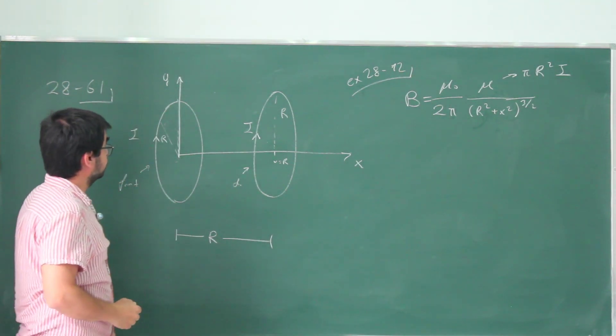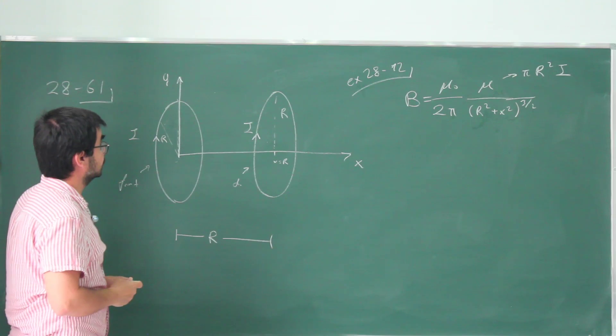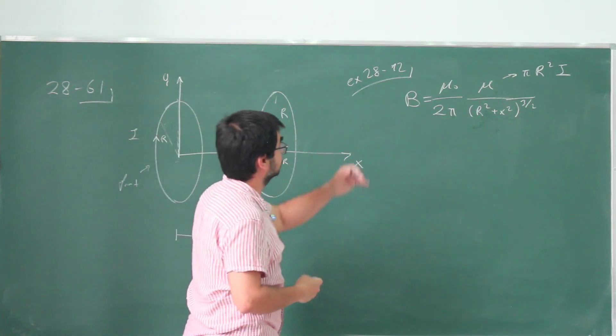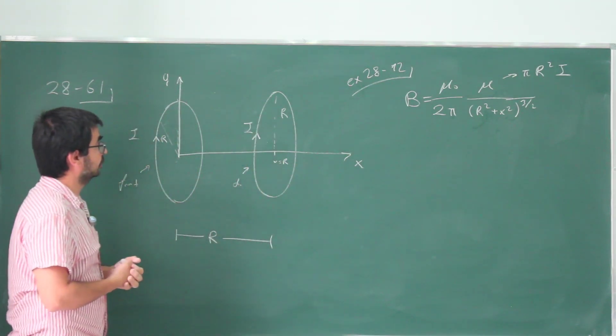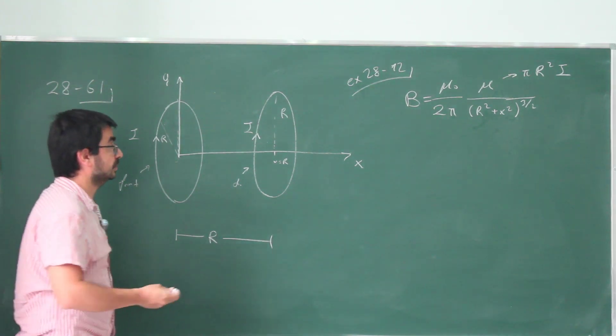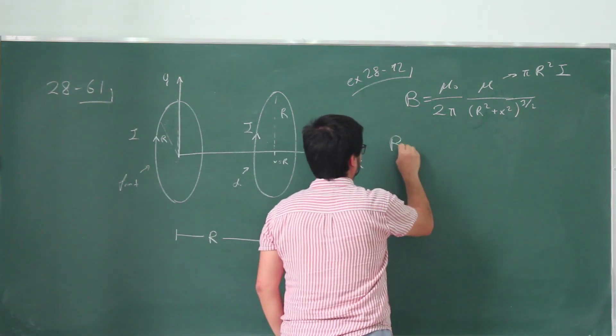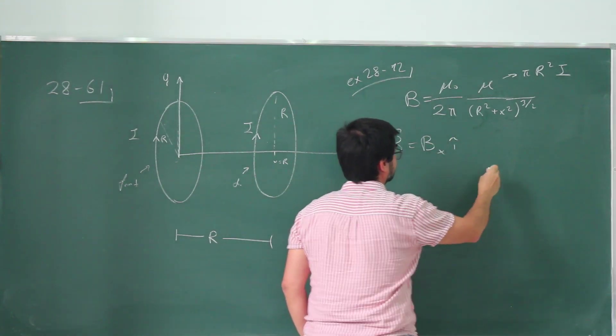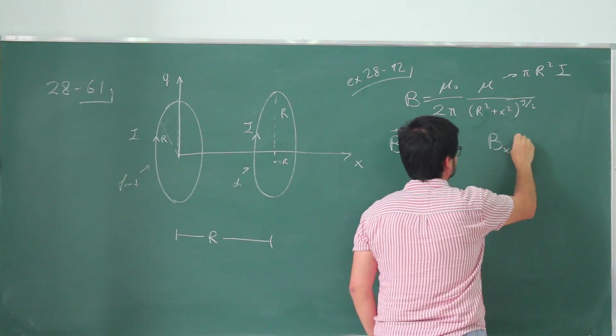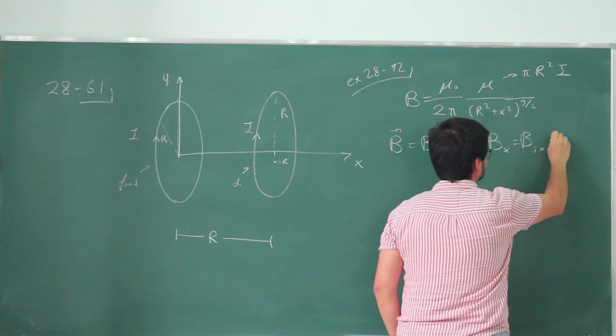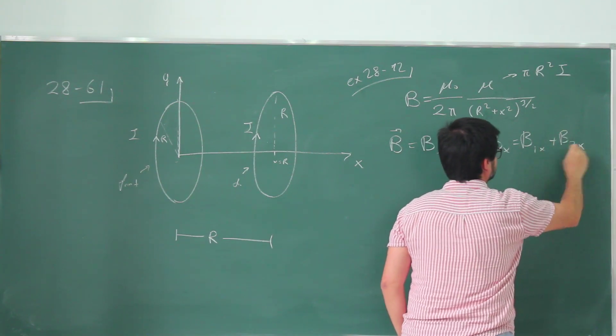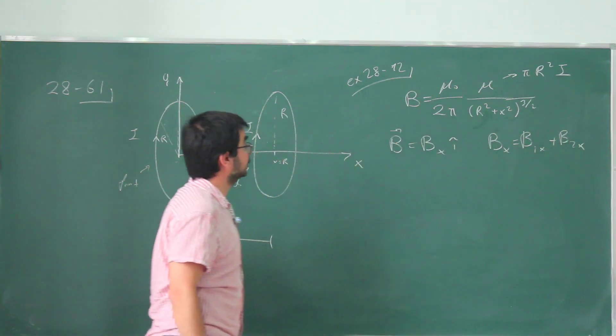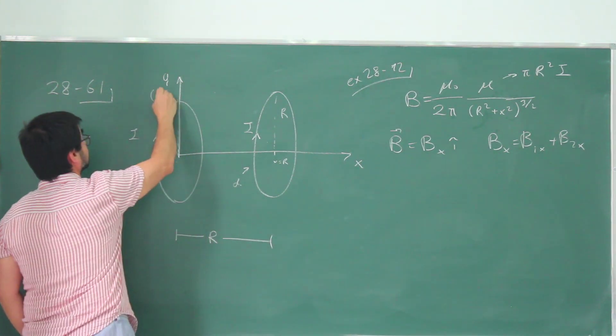Now, the magnetic field throughout this x-axis is going to be just the sum of magnetic field contributions from these two. They are both in the same direction. So B is just Bx i-hat, and then Bx is just B1x plus B2x, the x-axis component of the magnetic field coming from these two coils. Let's call this 1 and 2.